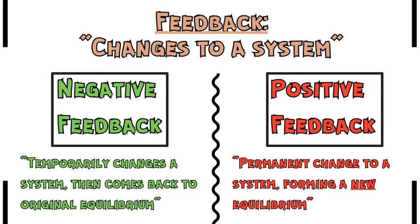Negative feedback is defined as a temporary change to the system, after which the system will go back to the original equilibrium or steady state. Positive feedback, by contrast, is more of a permanent change — stronger or longer lasting — that forces the system to change and not go back to the original equilibrium or steady state. It moves to a new equilibrium, and that system is now permanently changed. So negative feedback is temporary and returns to equilibrium, while positive feedback is a change strong enough that the system cannot go back to its original equilibrium.